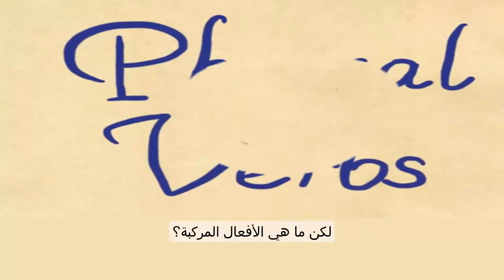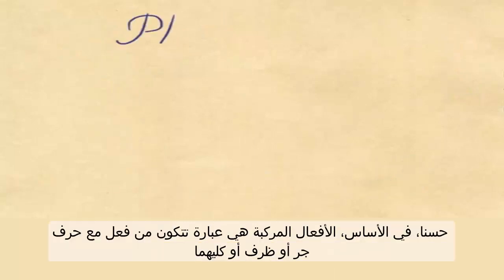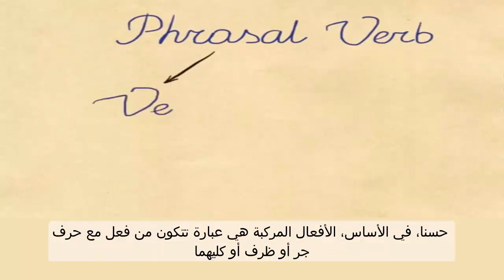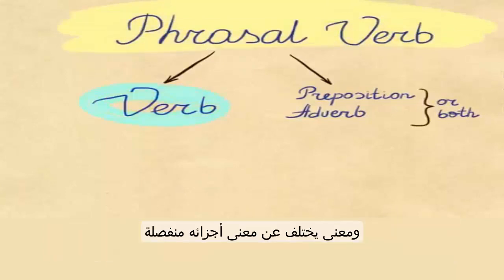But what is a phrasal verb? Basically, a phrasal verb is a phrase that consists of a verb with a preposition or adverb or both, the meaning of which is different from the meaning of its separate parts.